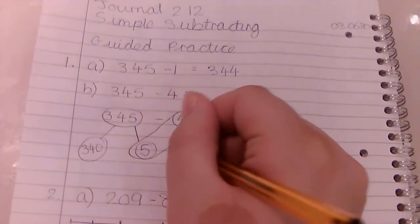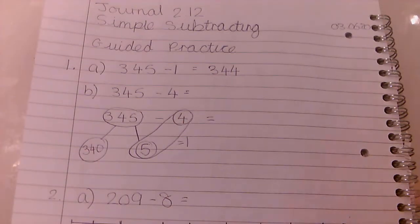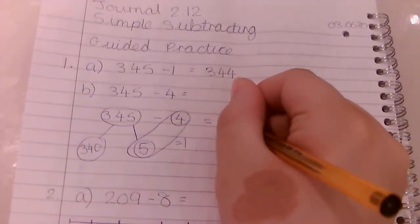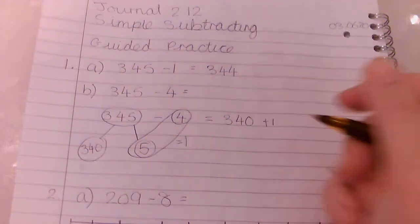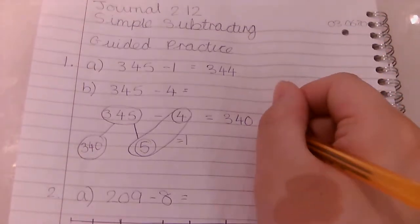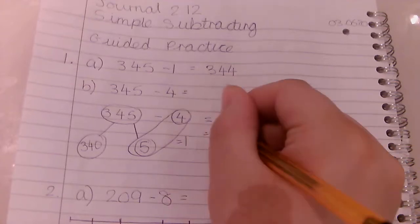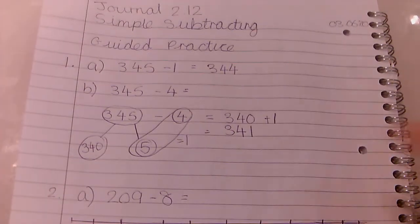So we're going to have to add. We know that this is going to be 1, so let's add them back together. So 340 add 1, remember you can kind of hear it in your head, 340 and 1 is 341. Easy.